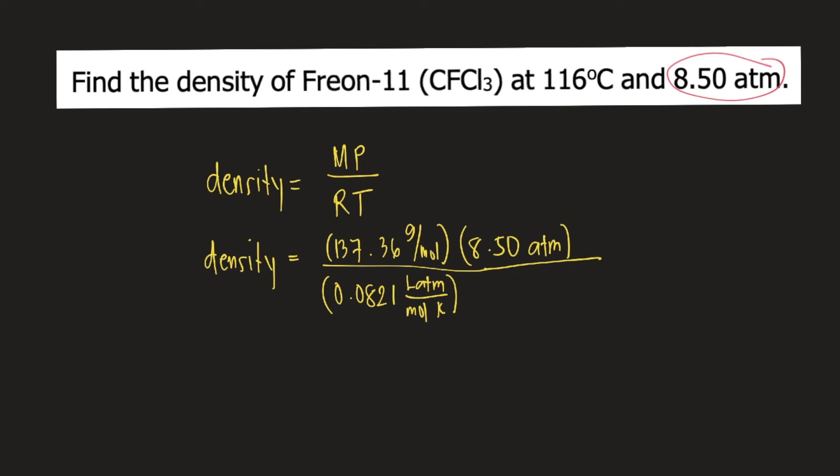In our problem, the temperature is still in degrees Celsius, 116 degrees Celsius. So we need to convert 116 degrees Celsius to Kelvin. How do we convert Celsius to Kelvin? You just add 273.15. So 116 plus 273.15 and that becomes Kelvin.